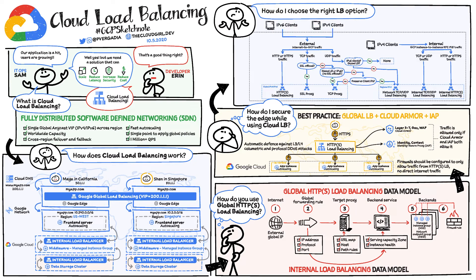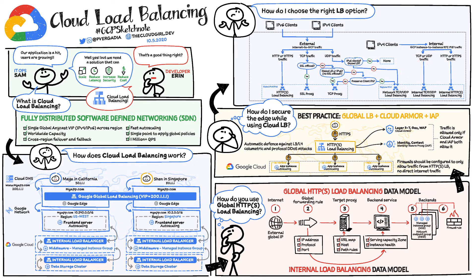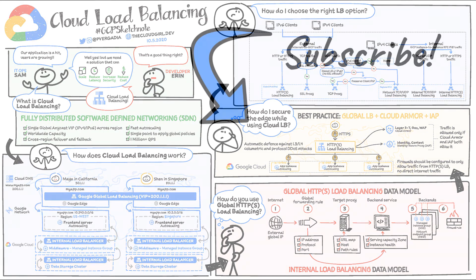For deciding which load balancing option is right for you, consider factors such as internal versus external, global versus regional load balancing, type of traffic — HTTPS, TLS, UDP, etc. That's cloud load balancing. See you next time with another GCP sketchnote.